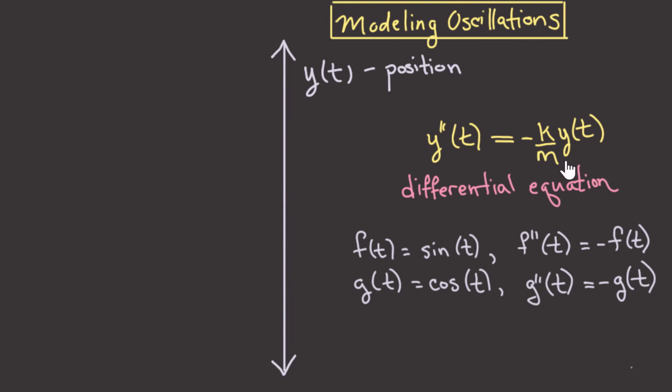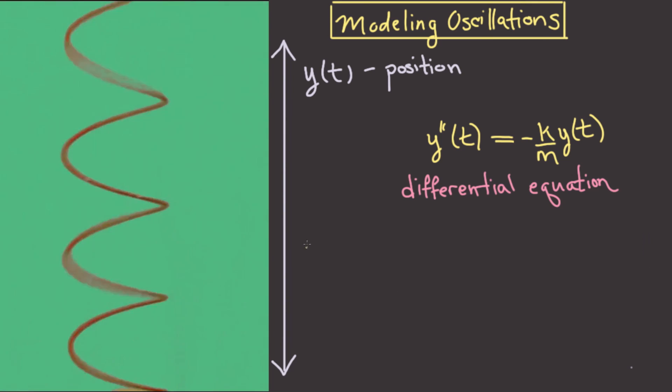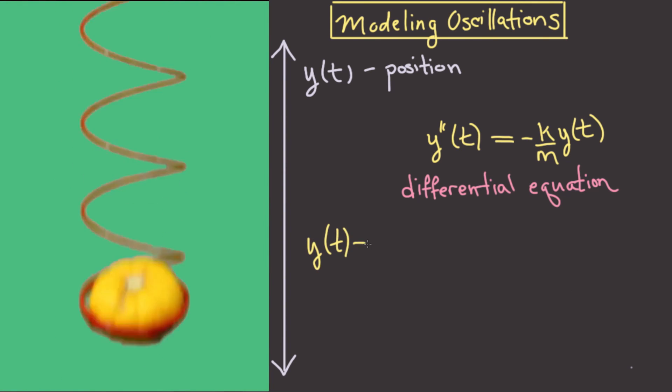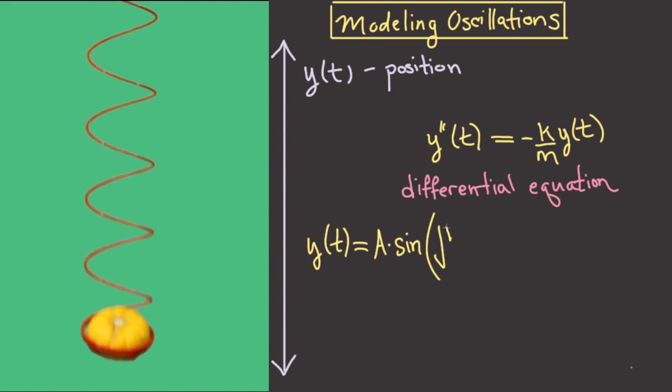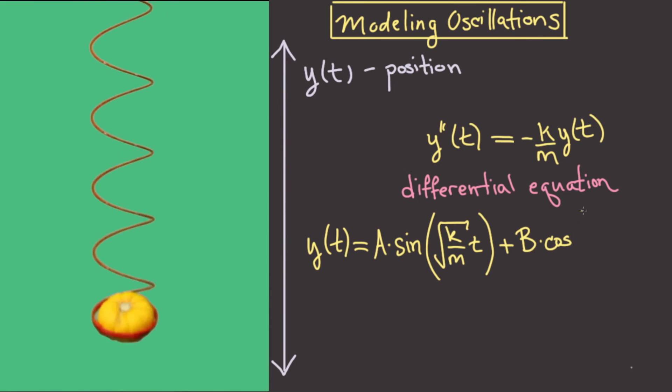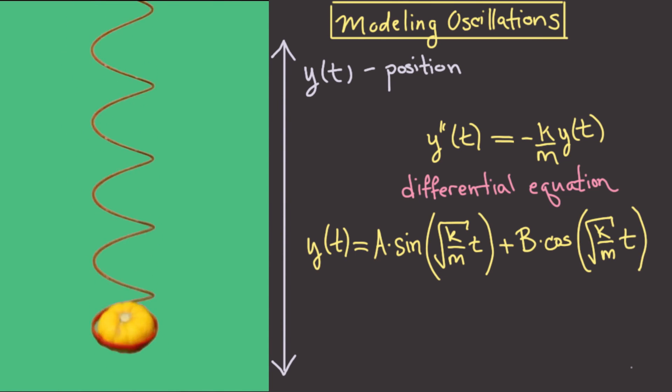Well, it turns out that a solution to this differential equation is given by y of t is equal to A, some constant, times sine of the square root of k over m times t plus B, another constant, times cosine of the square root of k over m times t. To see that this is a solution, all we need to do is differentiate it twice and see that the second derivative satisfies the relationship with this equation by plugging it into our differential equation.